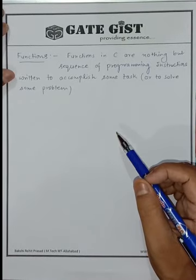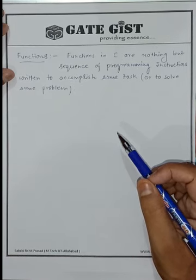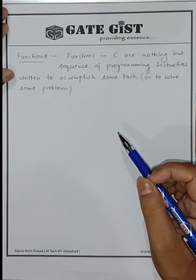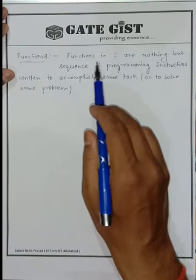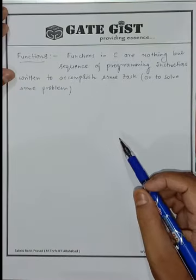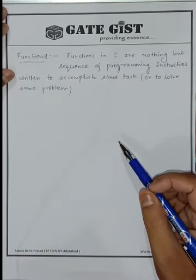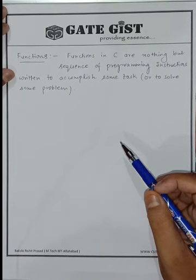It is to accomplish some task or to solve some problem. Two numbers, area and perimeter calculate, odd even check, table print - all the problems were given that we need to do this work and we need to use the sequence of instruction programming. Functions in C are nothing but sequence of programming instructions written to accomplish some tasks. If we need to perform any task, we need to write the sequence of instruction.